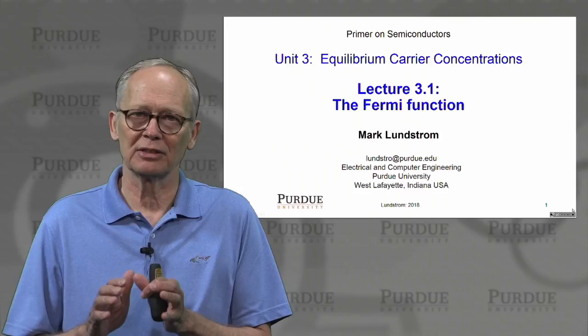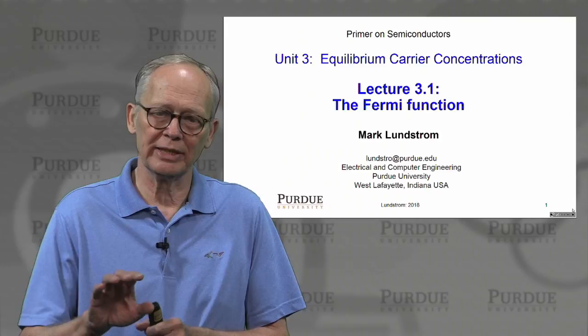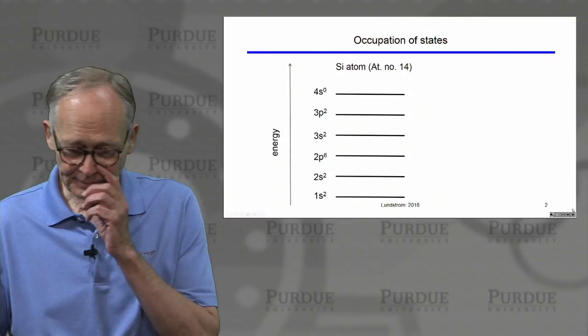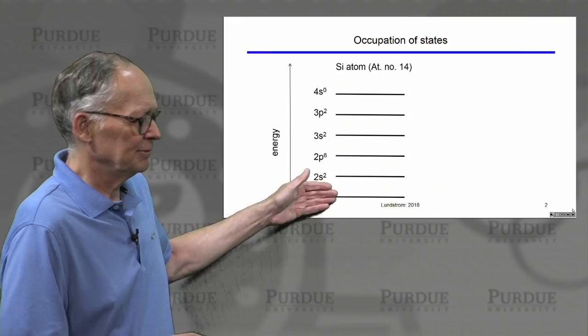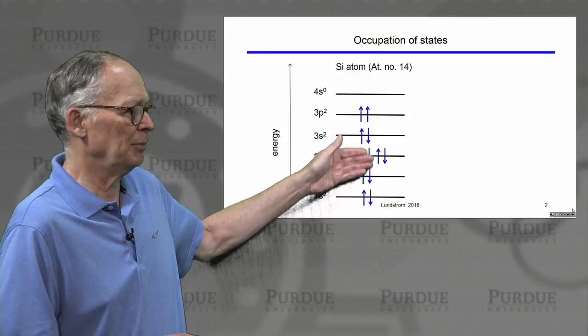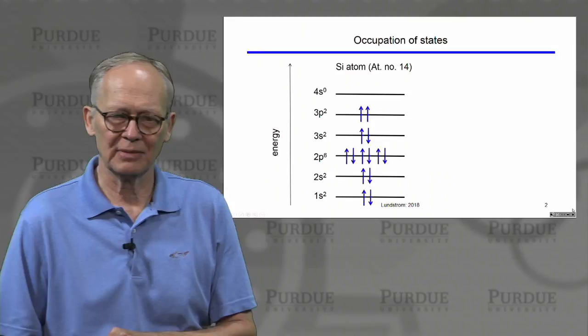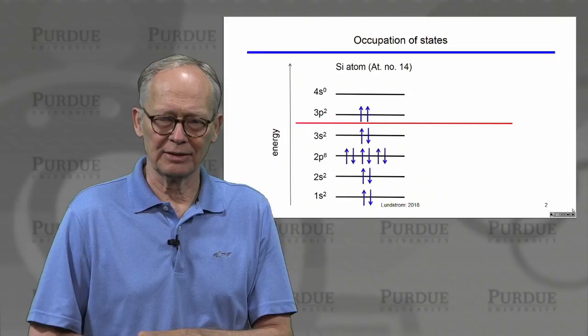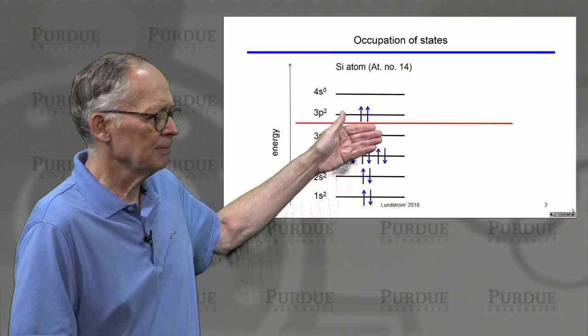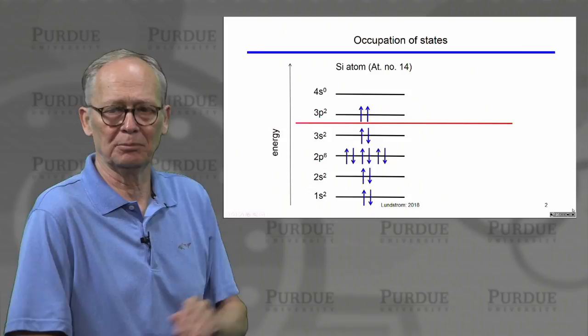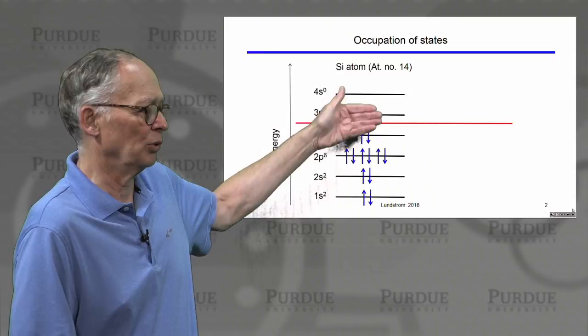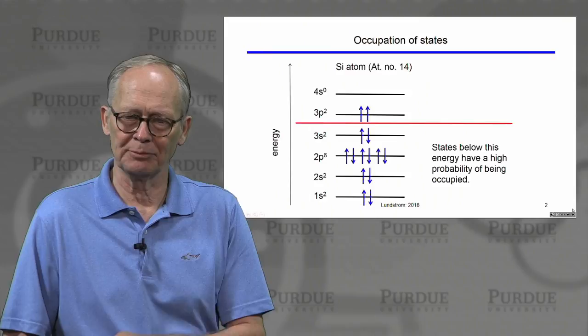Our first step towards doing that is to understand a quantity known as the Fermi function. To think about this, let's go back to the isolated silicon atom and its discrete energy levels. We know that we have 14 electrons and that we fill them up in the various SPD orbitals associated with the various quantum numbers one, two, and three. I could draw a line and say below that line the states are mostly filled or all filled, and above that line the states tend to be mostly empty. That line is the dividing line between the filled states and the empty states.